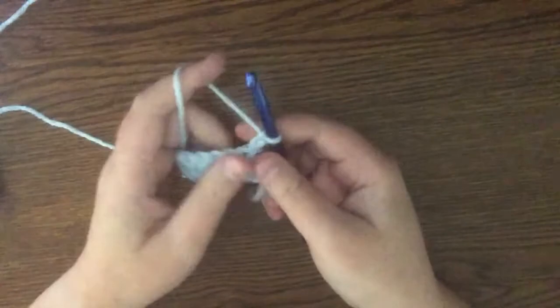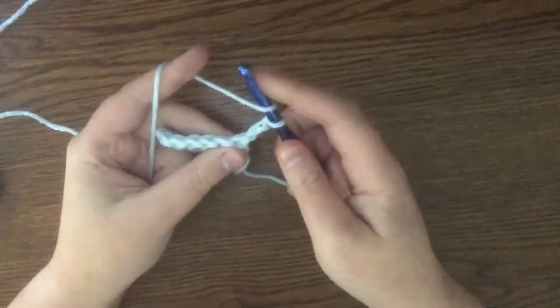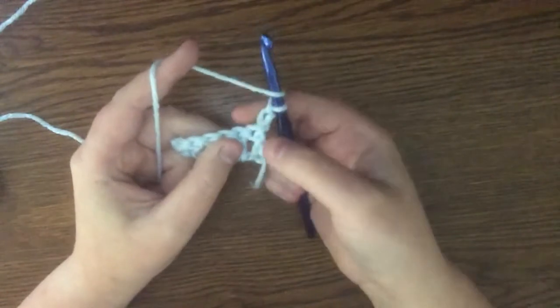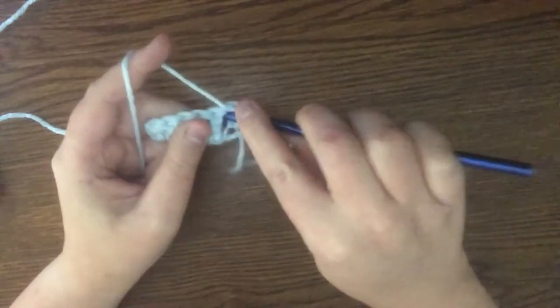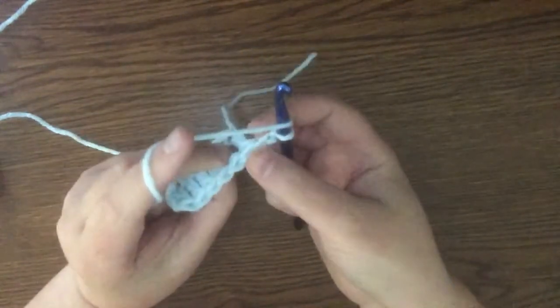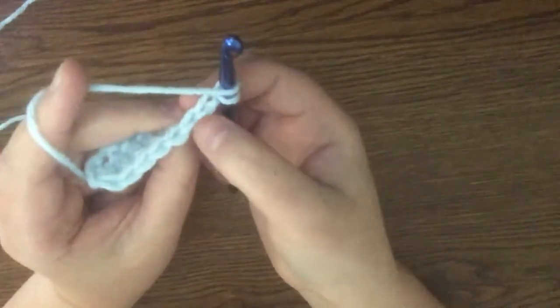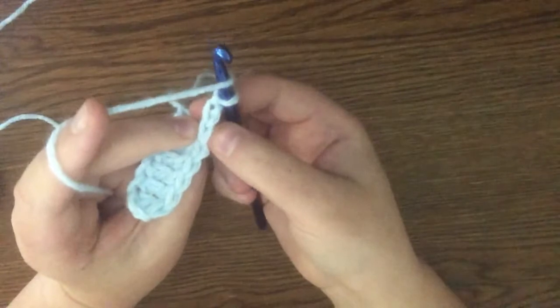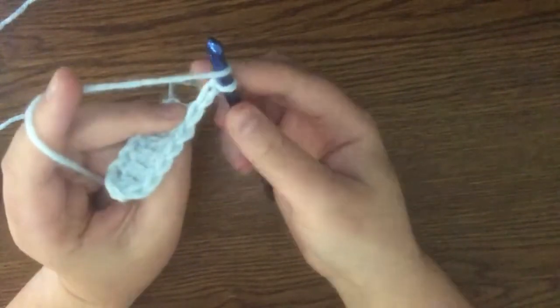And you just keep doing the same thing. So you're going to yarn over and insert your hook into the top of the last double crochet. So you're not going to go here in the middle, you're going to go into the top. It really just looks like a single crochet up here. And you're going to make sure that you're going into both loops, the front loop and the back loop, like this.